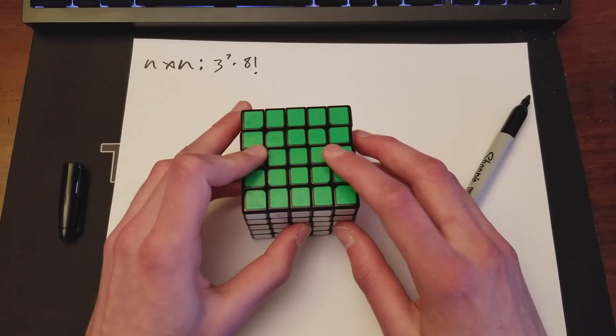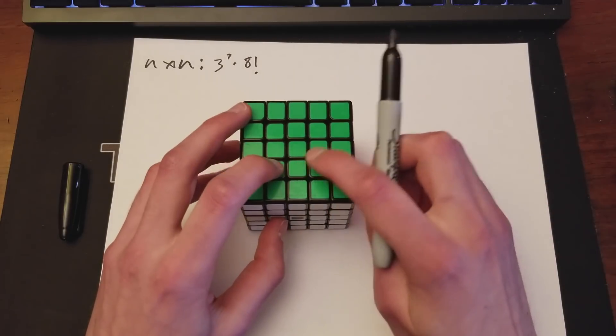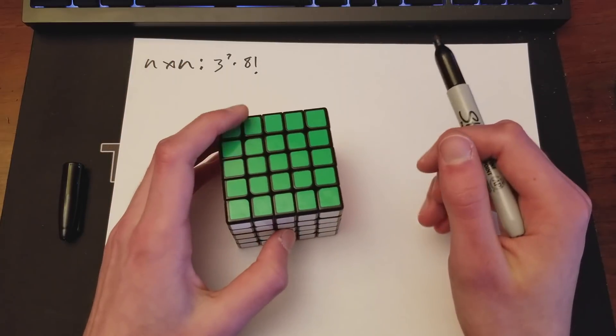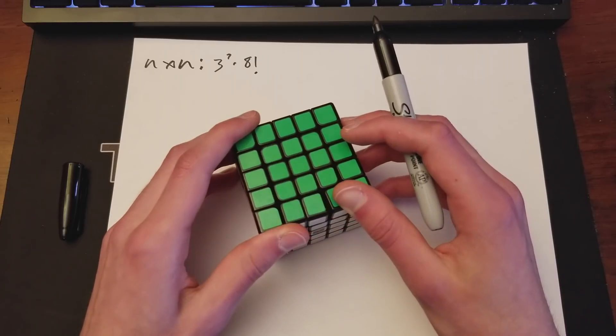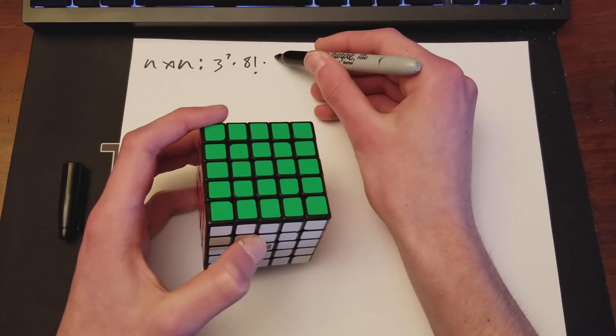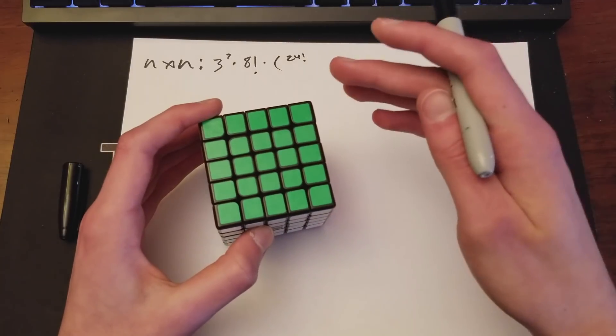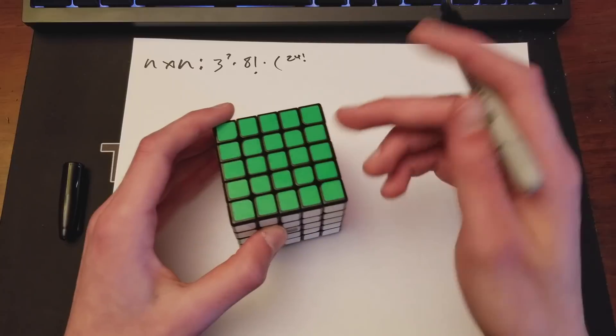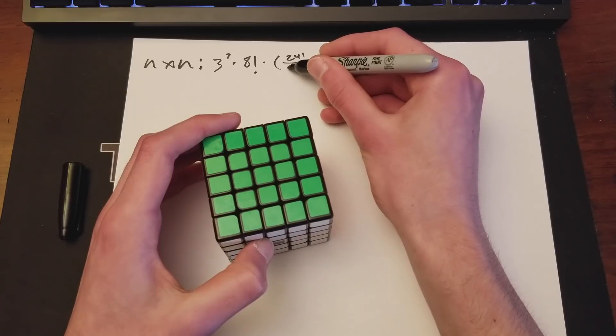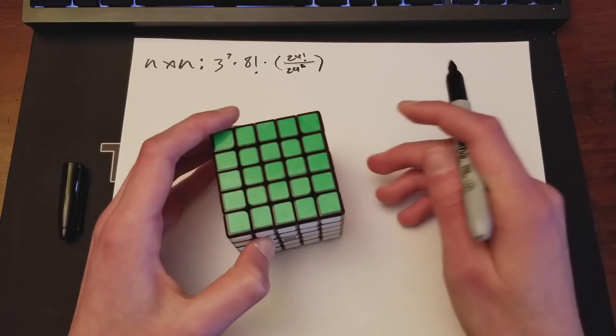And then the same thing for these corners out here. So you do 24 factorial divided by 24 to the 6th. And then, now on the edges. So it's important to note that this functions like a 3x3 edge. And then these function like 4x4 wings. So if we just combine those, you'll get the number.